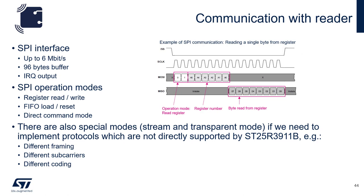Communication with the reader is done via an SPI interface that handles up to 6 megabits per second. It also has a 96-byte buffer and has an IRQ output. The SPI operation modes are register read/write, FIFO load and reset, and direct command mode. The direct commands for the 3911B can be found in the datasheet. There are also two special modes — stream and transport mode — that can be utilized if you need to implement custom protocols or protocols that aren't directly supported by the 3911B, such as those with different framing, different subcarriers, or different coding.